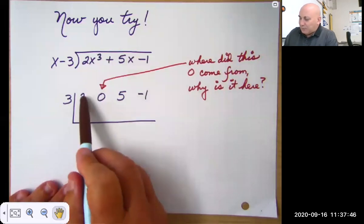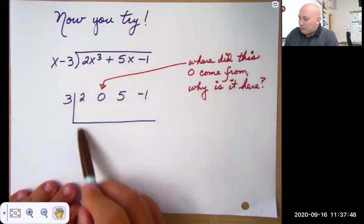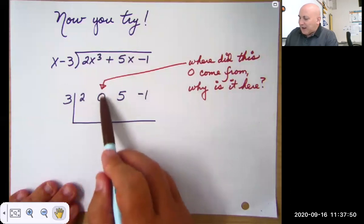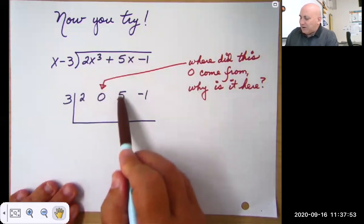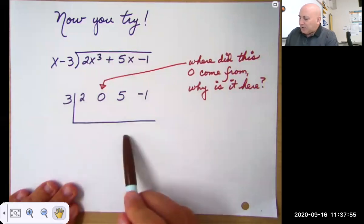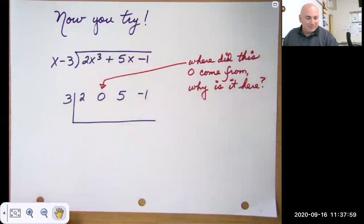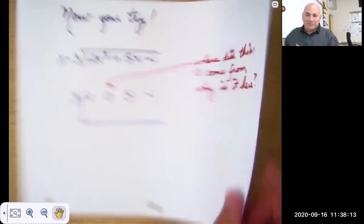So remember, you bring down the 2, multiply, move it up here, add. Multiply, move it up here, add. Multiply, move it up here, add. And in class, when we go over that, I'll tell you what answer you should have gotten. If you ended up with a remainder of positive 68, you probably did it correctly.